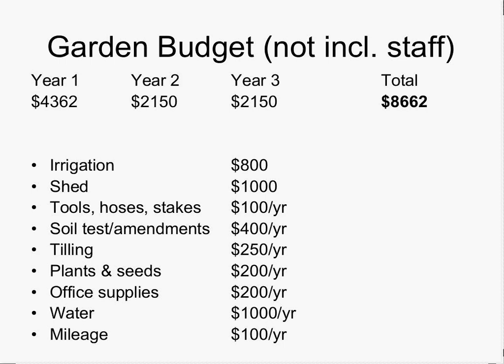A lot of listeners are interested in garden budget issues. We provide a $4,000 stipend to a coordinator every year, and we have $8,662 spread over three years to establish and maintain the garden. First-year expenses included $800 for an irrigation system and $1,000 for a shed. We also secured in-kind contributions. Ongoing expenses per year are noted in the slides, which will be available on the web for more detail.